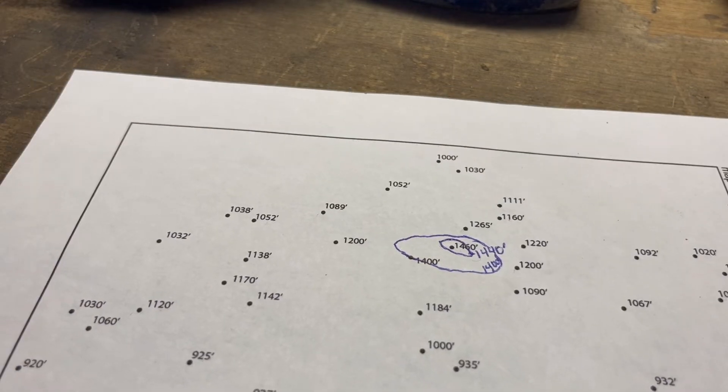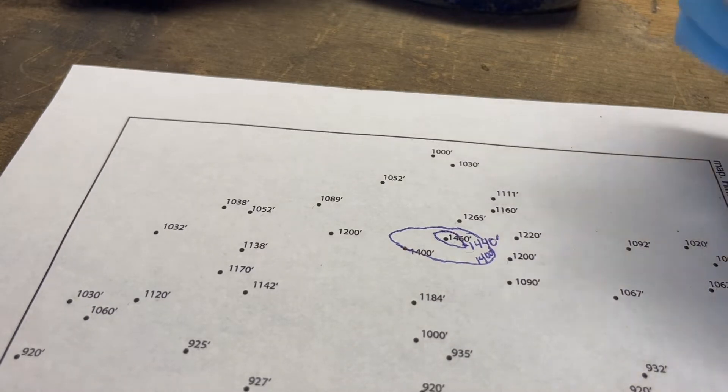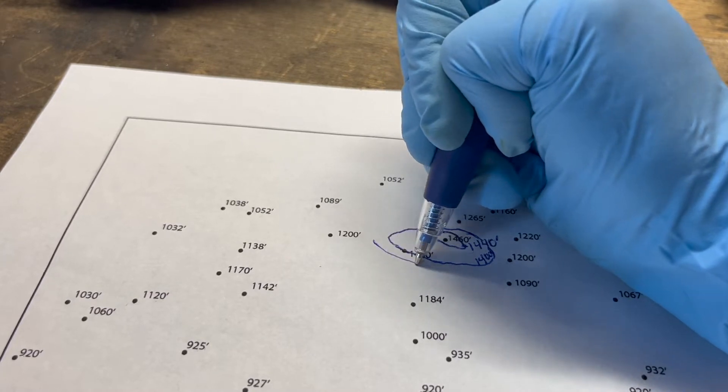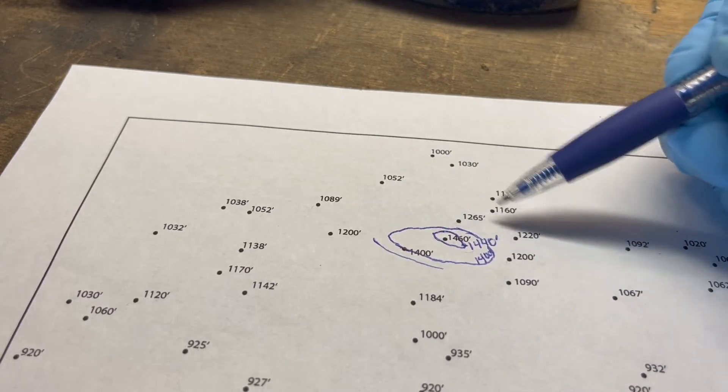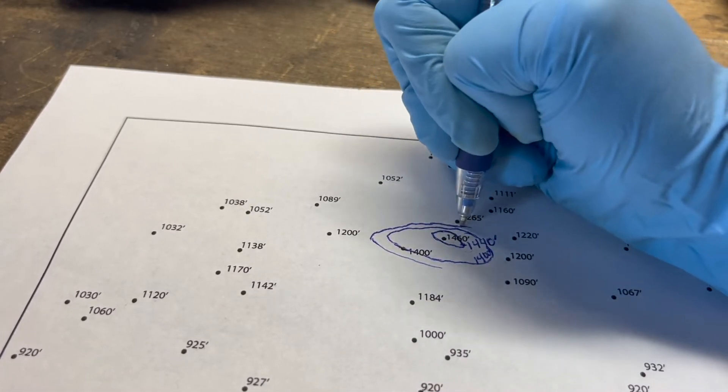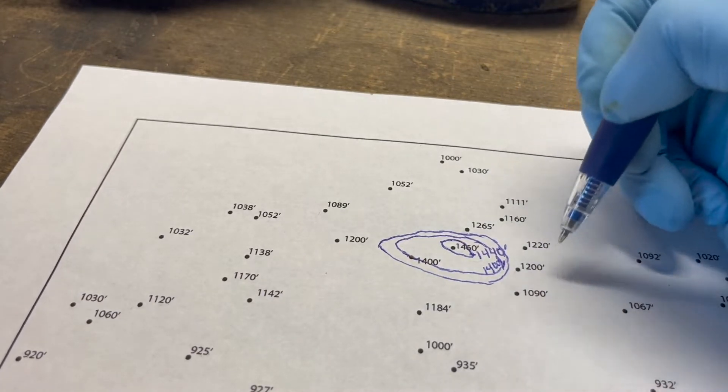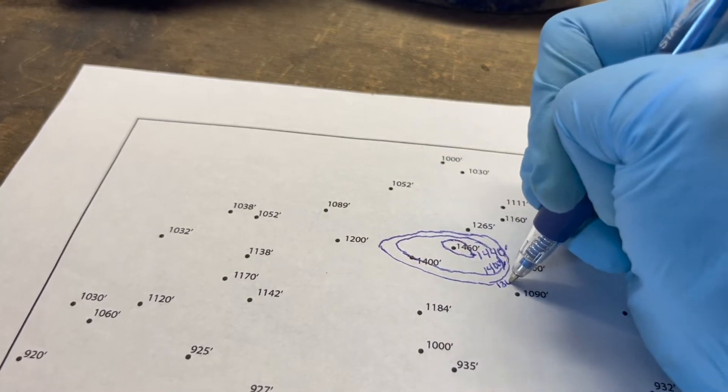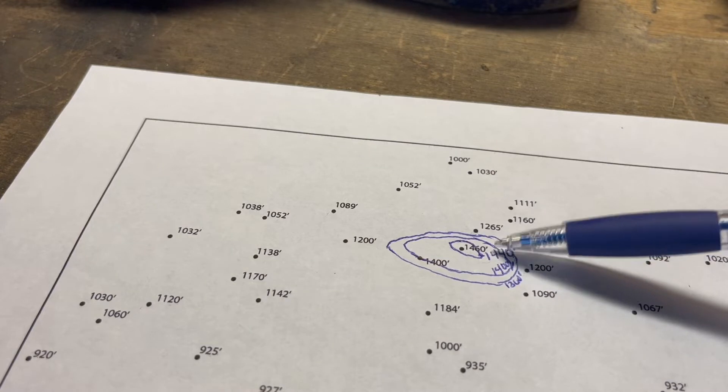Then the next line we have will be 1400 minus 40, so that would be 1360. I'm looking around as I'm drawing here and I see there's 1200 here, 1200 here, 1220, 1265. So if you have a line like 1360, technically it would be a little closer to a point of elevation like 1265 and further away from 1200, but I don't have a lot of room to work with here. So again, we're going down in elevation because we see this being the highest point, 1460, and my numbers are dropping in value.